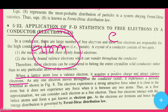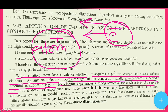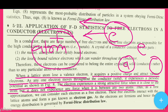Any electron experiences attraction as it moves throughout the conductor solid. It experiences a periodic potential as shown in Figure 8. Any electron moving in a conductor has to experience a potential given in Figure 8. The electron experiences a strong attractive force when it is close to the atom, because the atom has lost an electron and gained a positive charge. But it does not experience any force when it is between any two atoms.